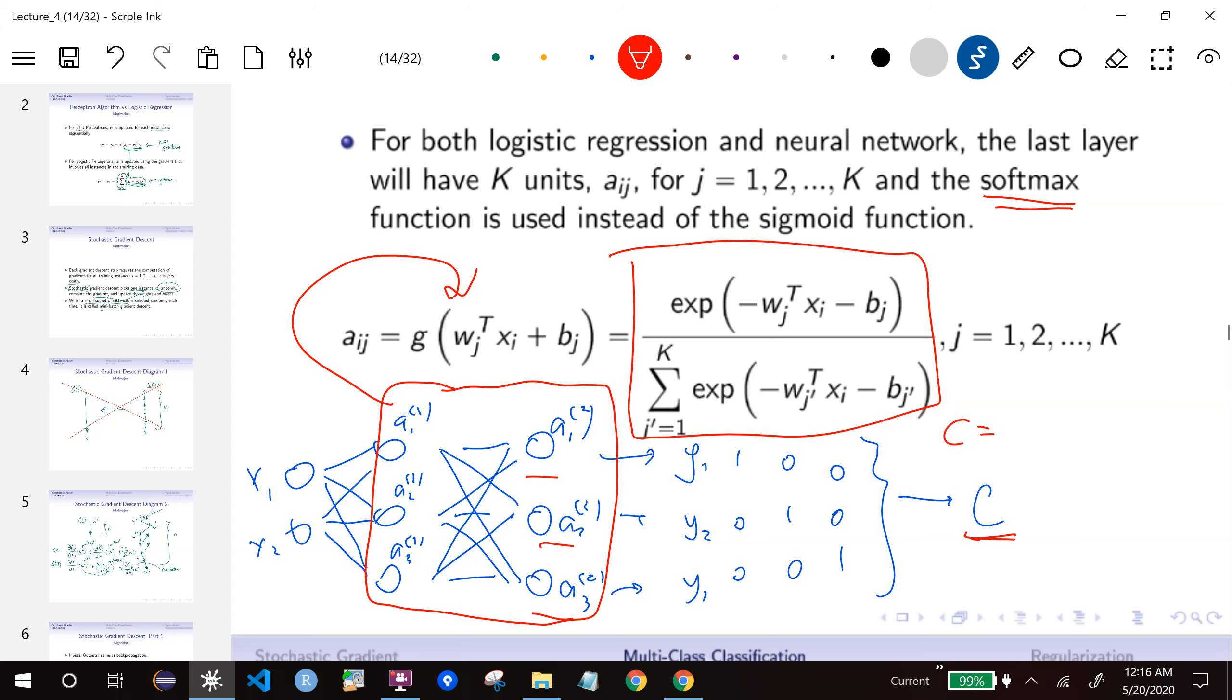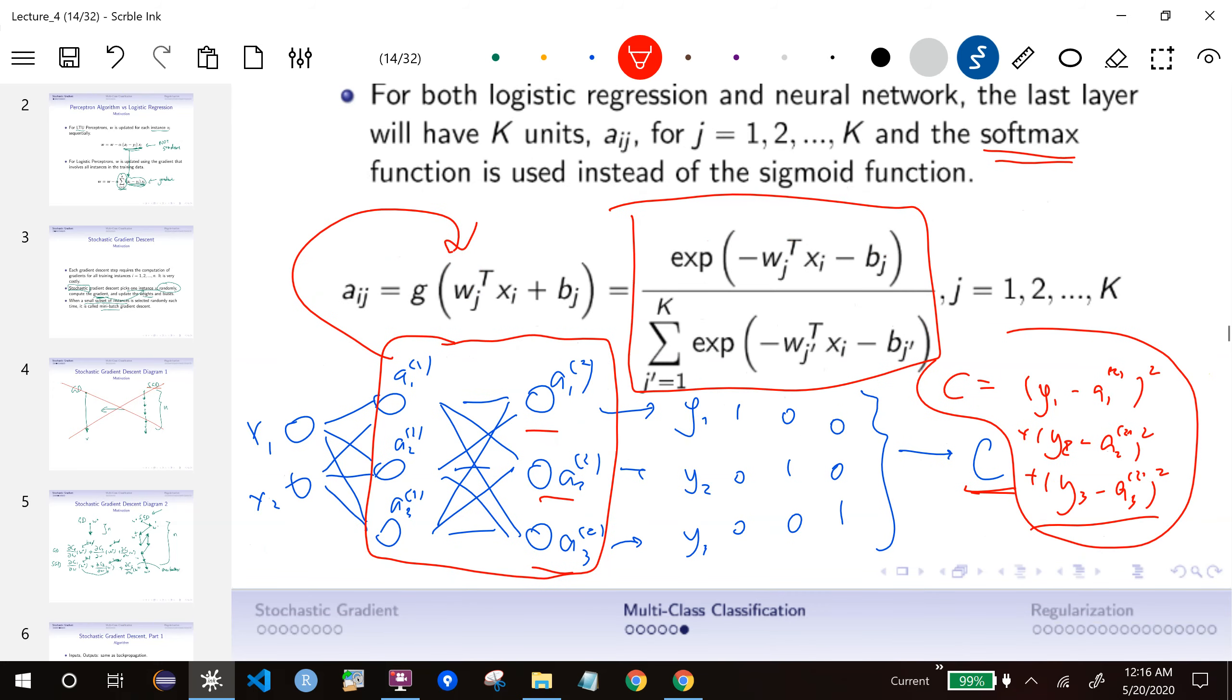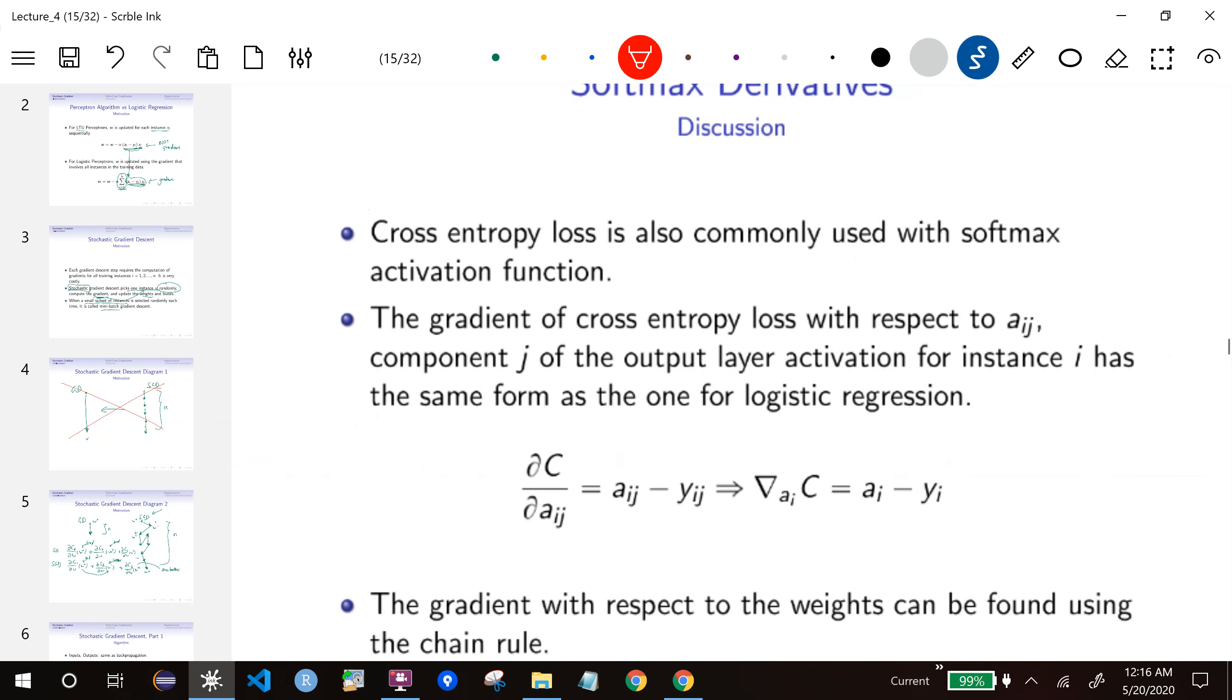So now the cost becomes, if we want to use the square cost, then we have Y1 minus A1,2 squared, plus Y2 minus A2,2 squared, plus Y3 minus A3,2 squared. Then we will have a cost like this. So it's basically the same idea. If you want to divide by three or divide by six, it's okay too. But we're not going to use this, obviously, because this combined with softmax is going to be hard to differentiate. So we'll use this cross entropy again.